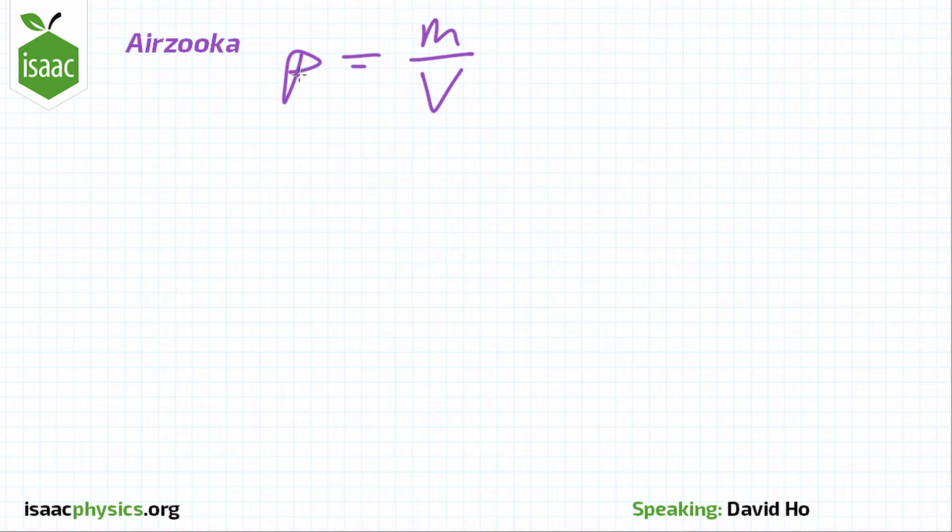Now we want to find out mass and we're given density and volume, so the first thing that we should do is rearrange this equation. In order to put mass on its own, we can multiply both sides by V and get m is equal to rho times V.